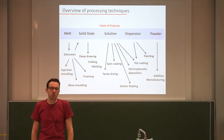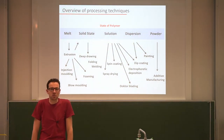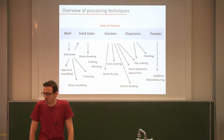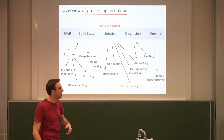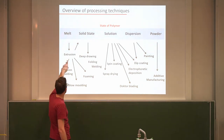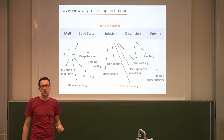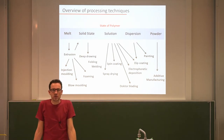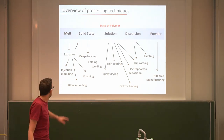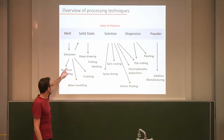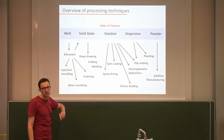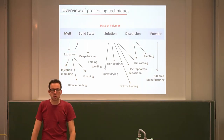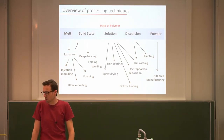We discussed the basic processes required to make polymer materials or products. We discussed extrusion and learned about the importance of the reciprocating screw. Then we looked at injection molding, discussing process parameters, approaches, difficulties, and challenges.